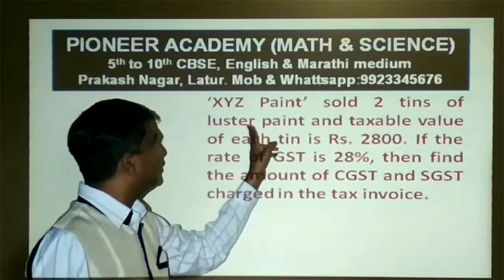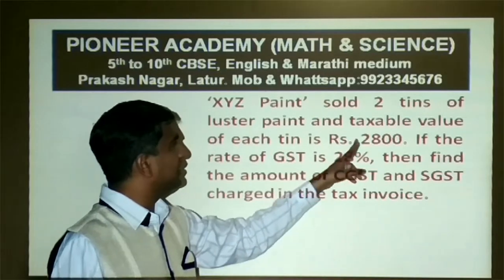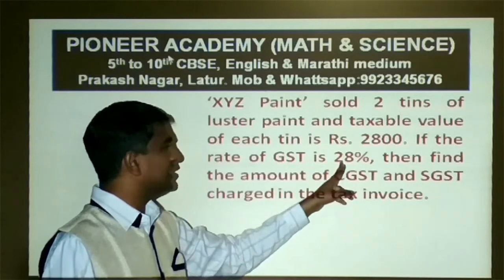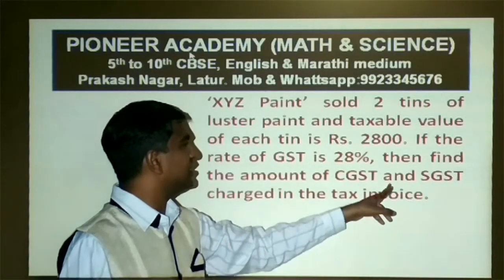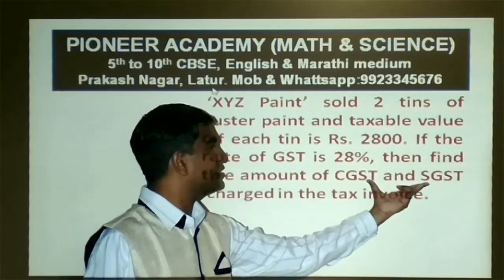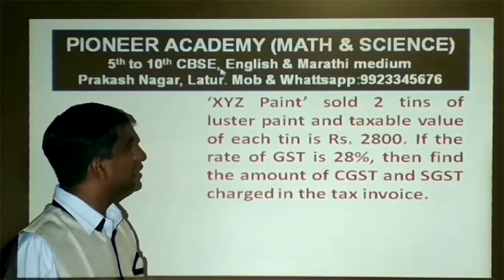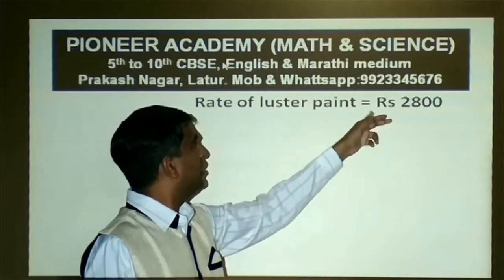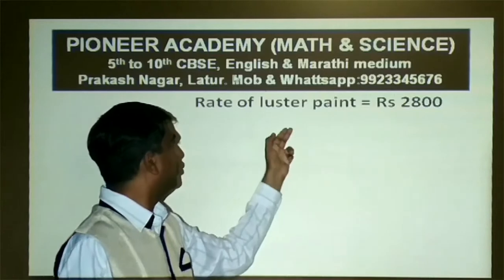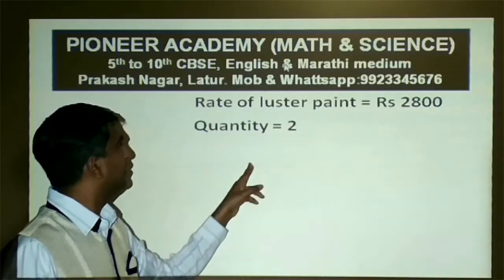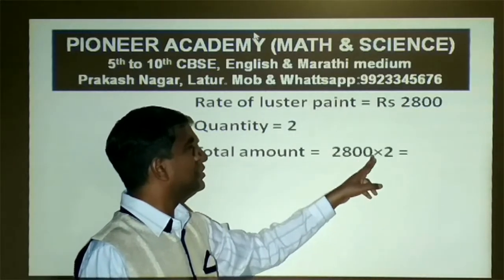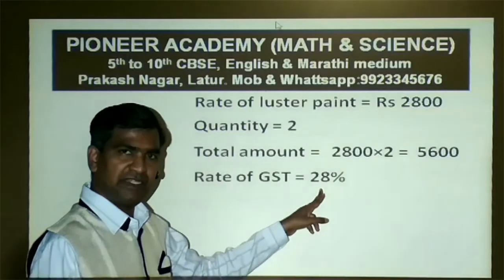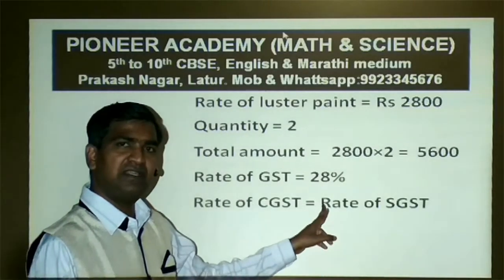XYZ Paint sold two tins of luster paint. The taxable value of each tin is Rs 2800. The amount for 2 tins is equal to Rs 5600. The rate of GST is 28%.